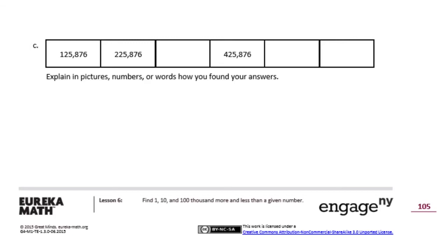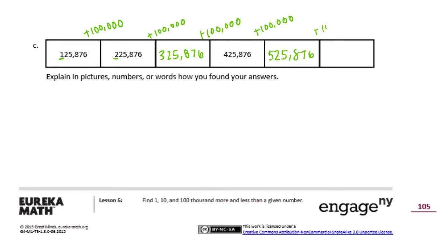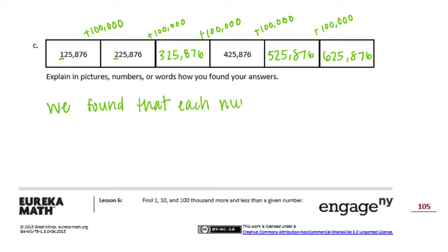C: we have 125,876, 225,876. The difference is in the hundred-thousands, so we added 100,000 to get to the next one. Adding 100,000 each time gives 325,876, 425,876, 525,876, 625,876. Each number increased by 100,000.